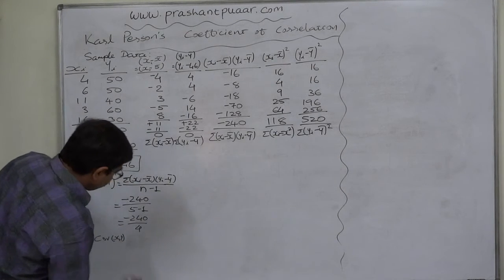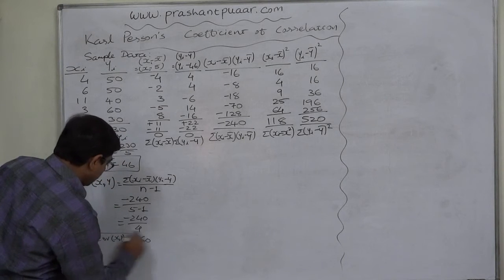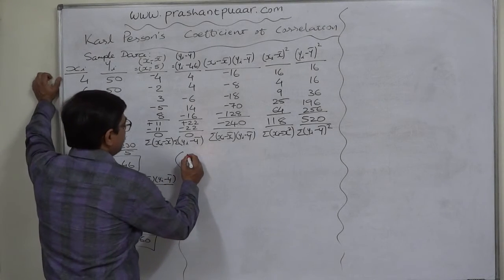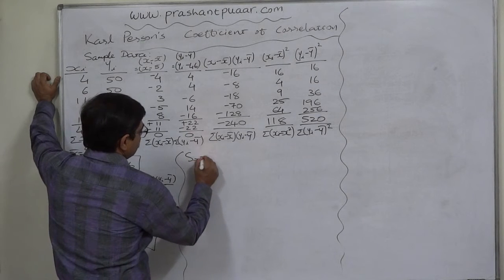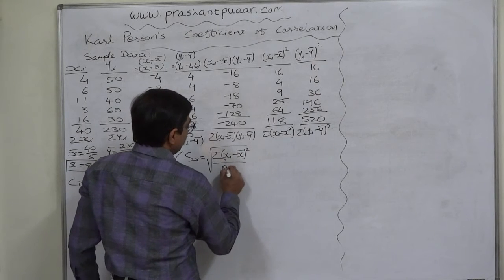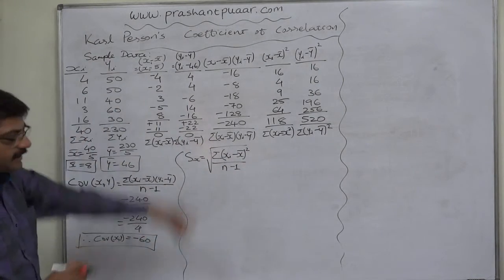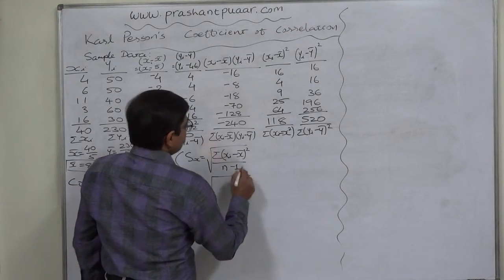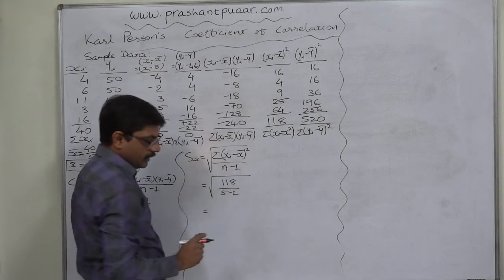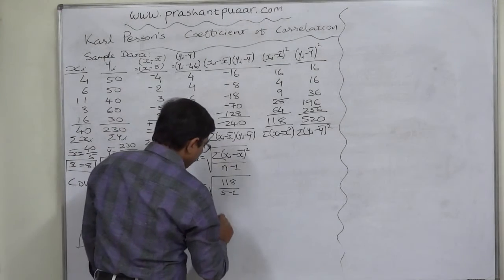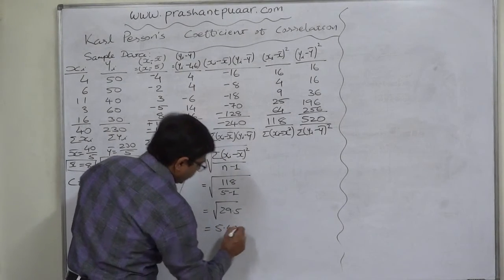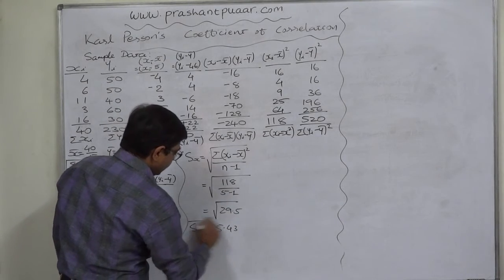The covariance is −60, so we can say there is negative correlation between x and y. Now, standard deviation of x equals the square root of the summation of (x minus x-bar)² divided by n minus 1. That is √(118/4) = √29.5 ≈ 5.43. We restrict to two decimal places, so Sx = 5.43.